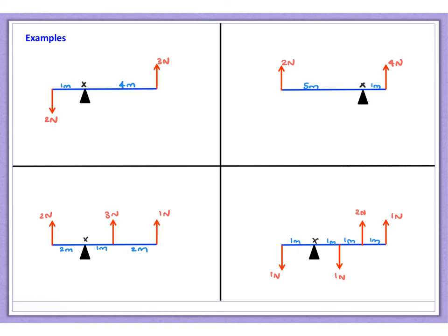Here are four examples. In each case, find the size and direction of each moment produced by each force about the pivot point marked X, and decide what the overall effect is. For question one: the 2 newton force has a moment of 2 newton metres anti-clockwise about X. The 3 newton force has a moment of 3 times 4, which is 12 newton metres, also anti-clockwise. Both forces produce an anti-clockwise moment, giving a total anti-clockwise moment of 14 newton metres overall.